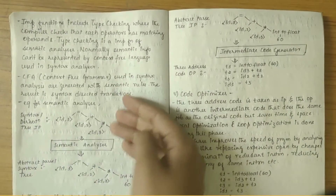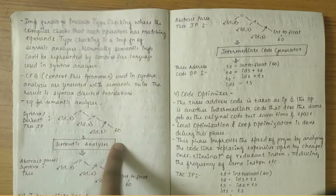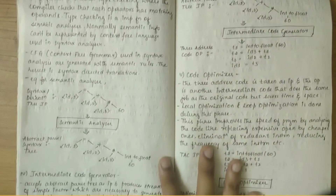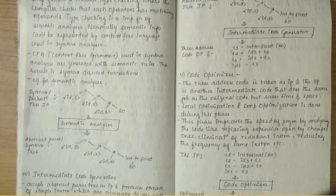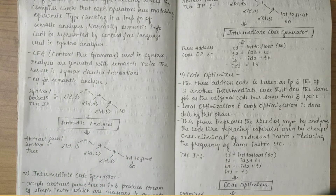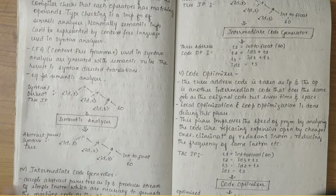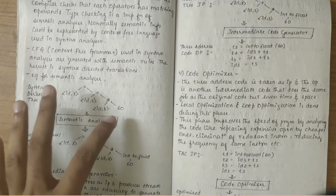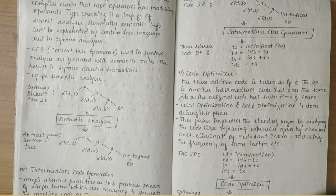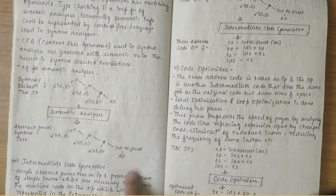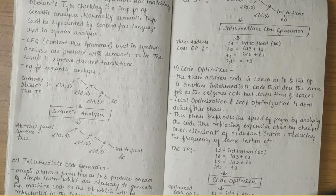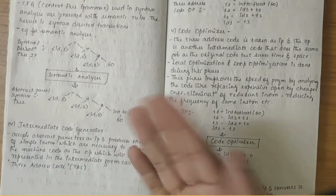The derivation tree or syntax tree is taken as input and fed into the semantic analyzer, and we obtain the abstract parse tree or annotated syntax tree. Here the input is the syntax or derivation tree, and the output is the abstract parse tree. For example, 60 is converted from int to float — 60.0 — obeying the semantic rules using context-free grammar.